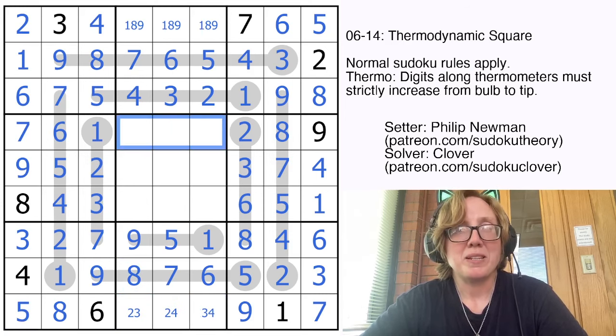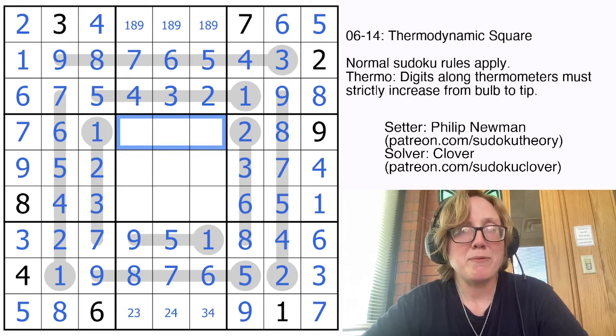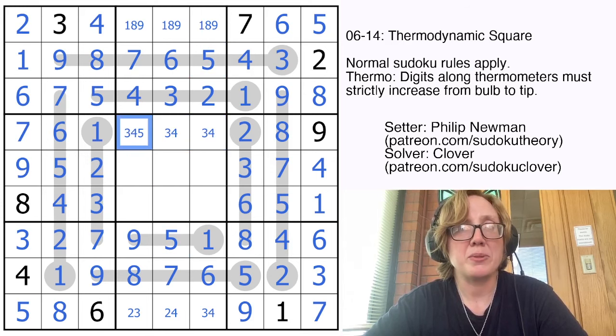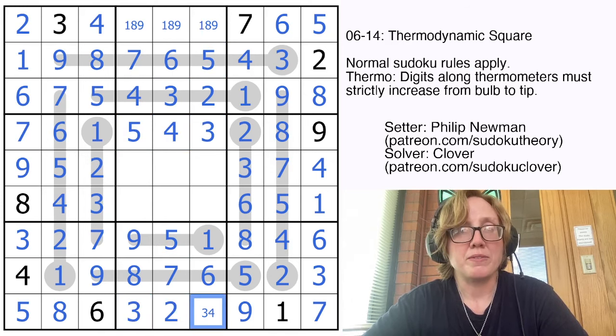Let's finish off that middle region with classic Sudoku techniques. We need 3, 4, and 5 in this row. 5 can't go in those cells because of these 5s. So it goes here. That 3 resolves, and then that 4 is going to resolve this.